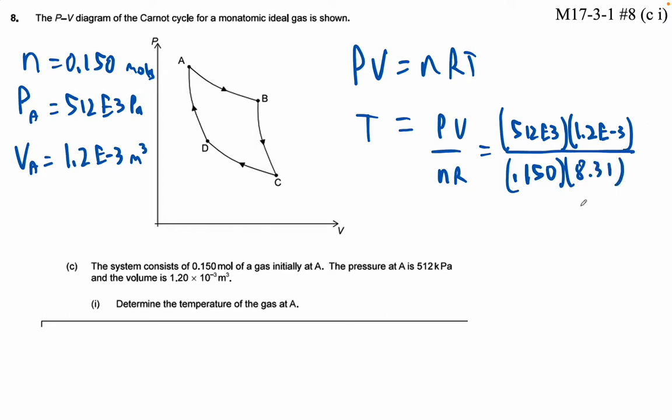This calls for a calculator. Okay, 512E3 times 1.2E minus 3. If you notice, the scientific notation just totally cancels there. Divide it by 8.31, and we get 492.9.